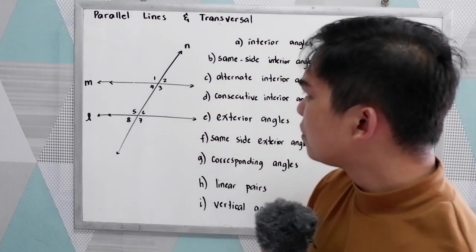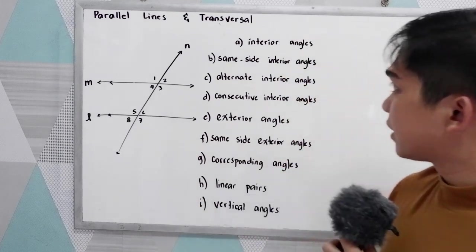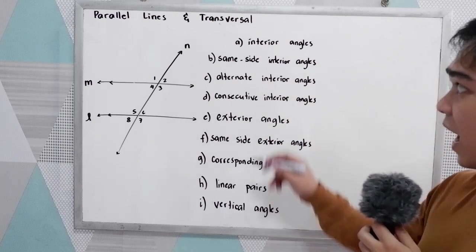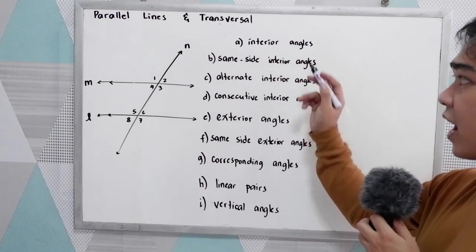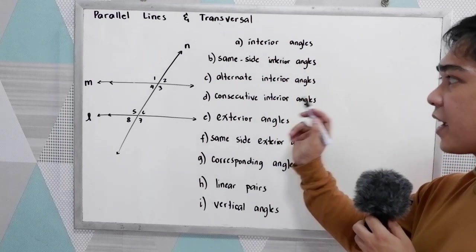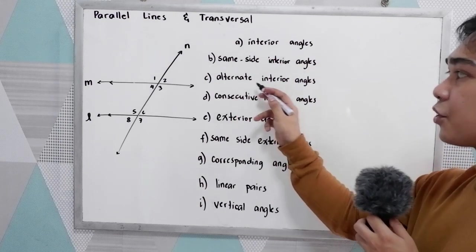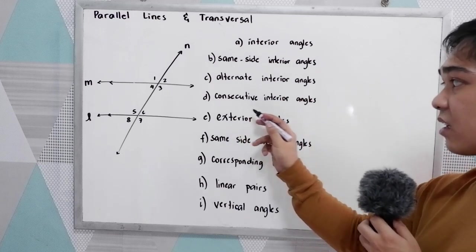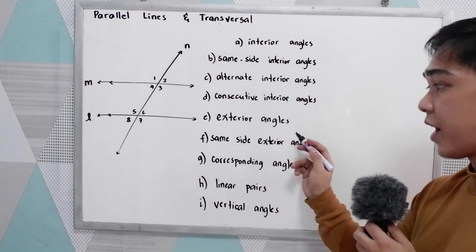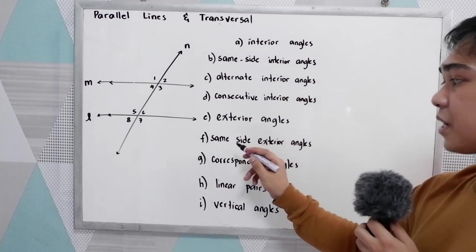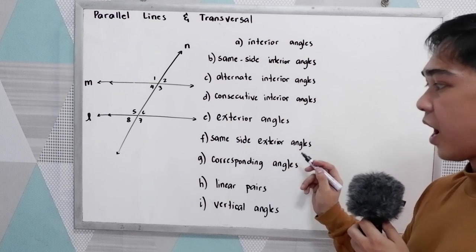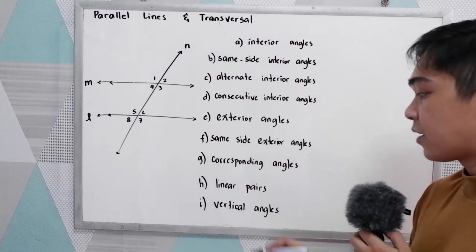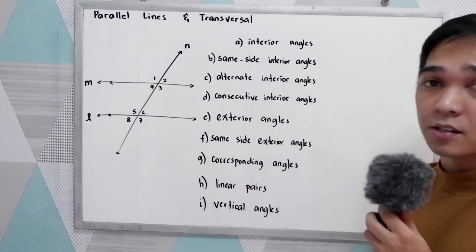Now you will encounter the following terms: interior angles, same side interior angles, alternate interior angles, consecutive interior angles, exterior angles, same side exterior angles, corresponding angles, linear pairs, and vertical angles.